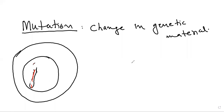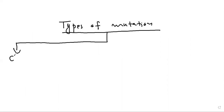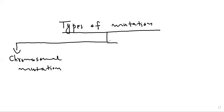Now let's discuss the types of mutation. Mutation is classified on different bases. On the basis of occurrence, there are two types of mutation: one is chromosomal mutation, and the other is gene mutation.